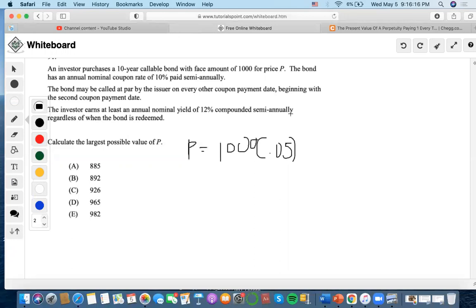And then 10 years, A to 20. And the bond may be called at par by the issuer on every other coupon date beginning with the second coupon date. The investor earns at least an annual nominal yield of 12% compounded semiannually, so 6%, regardless of when the bond is redeemed. Let's calculate the largest possible value of P.